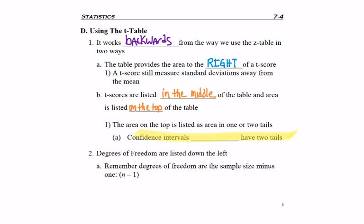But confidence intervals are always a centered 90%, 95%. So that means you have a tail on each side. So confidence intervals are always, always, always two tails.